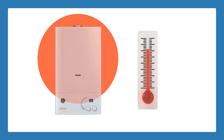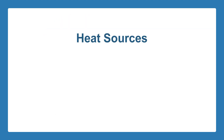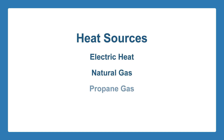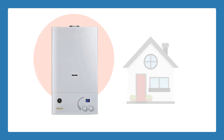Heat can be produced by means of energy from multiple sources such as electric heat, natural gas, propane gas, or fuel oil. Electric furnaces heat up like large toasters, while oil and gas furnaces employ the use of electrically signaled control valves to produce flames. Once the furnace heats up for a short time, the furnace blower kicks in.